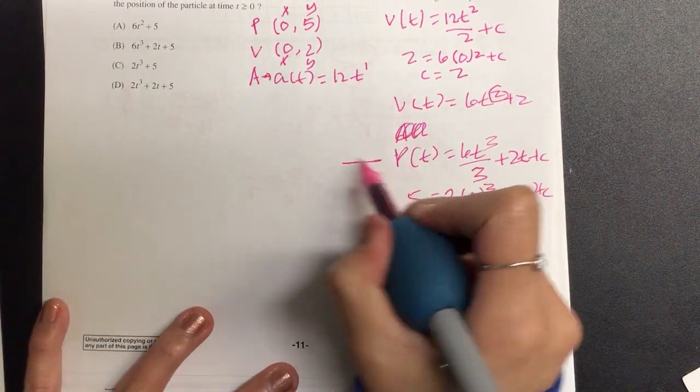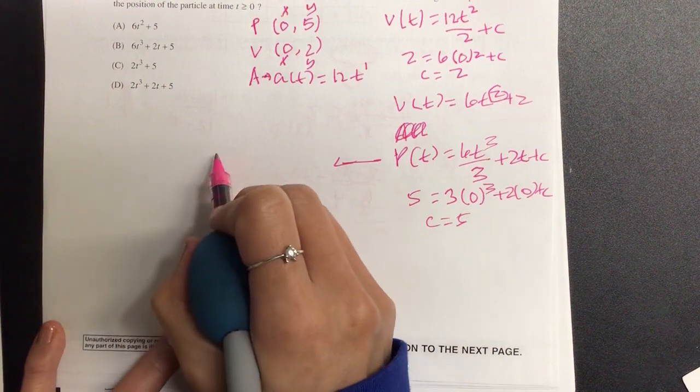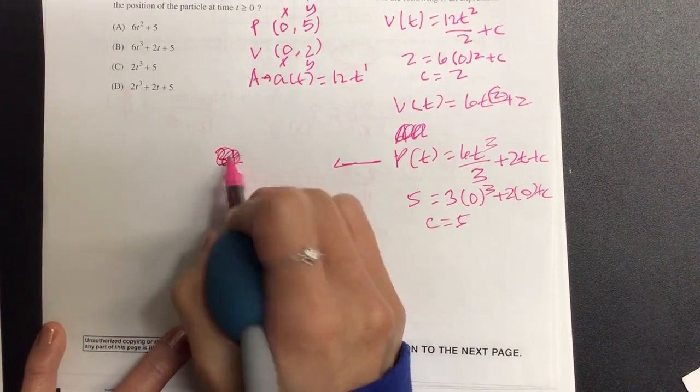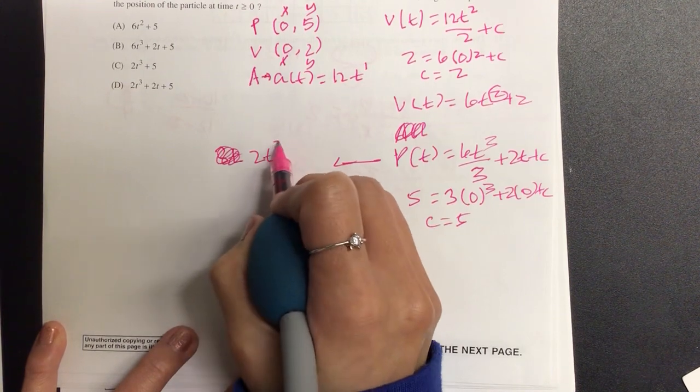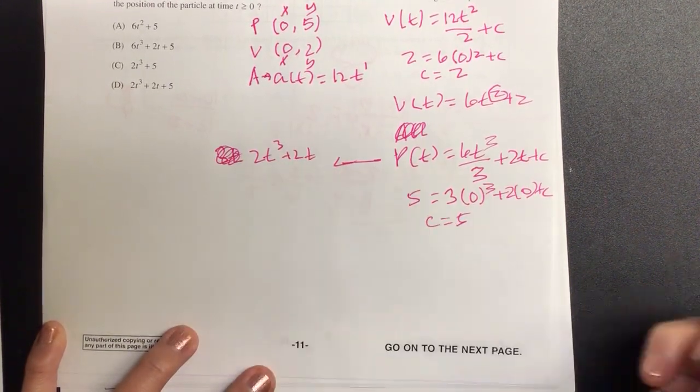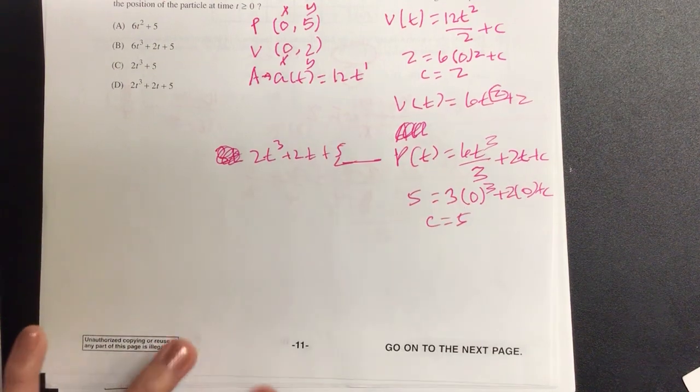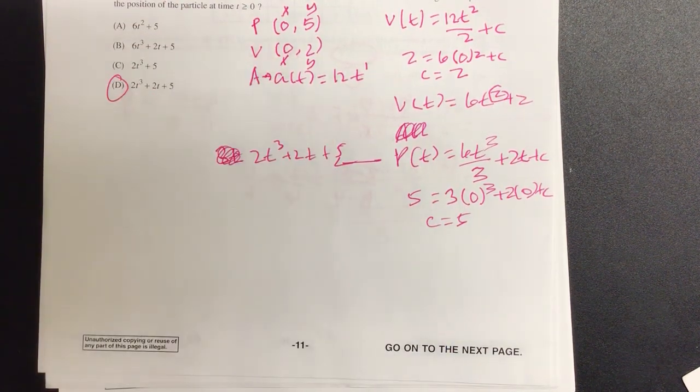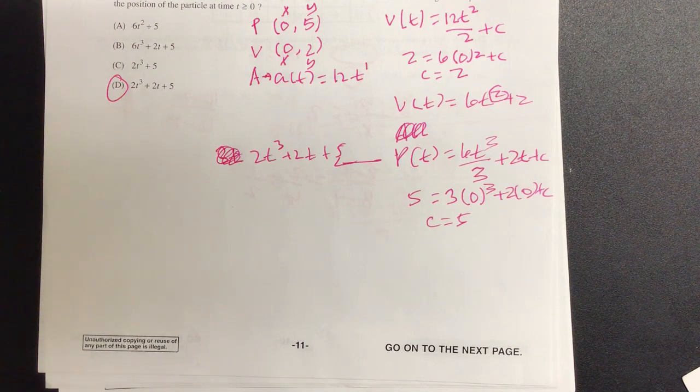So then if I were to rewrite the particular particle, that's going to give us three t, no, not three. Two, right? Two t cubed plus two t. And our c value is five, which makes it which letter? Boom. Done. Now let's go to number, was it 24? 24.